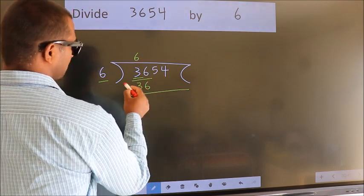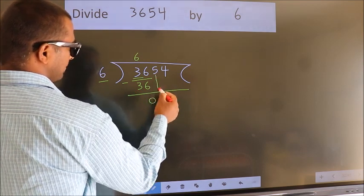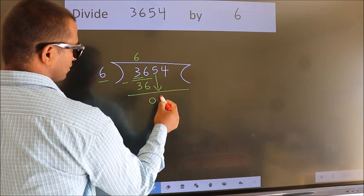Now we should subtract. We get 0. After this, bring down the beside number, so 5 down.